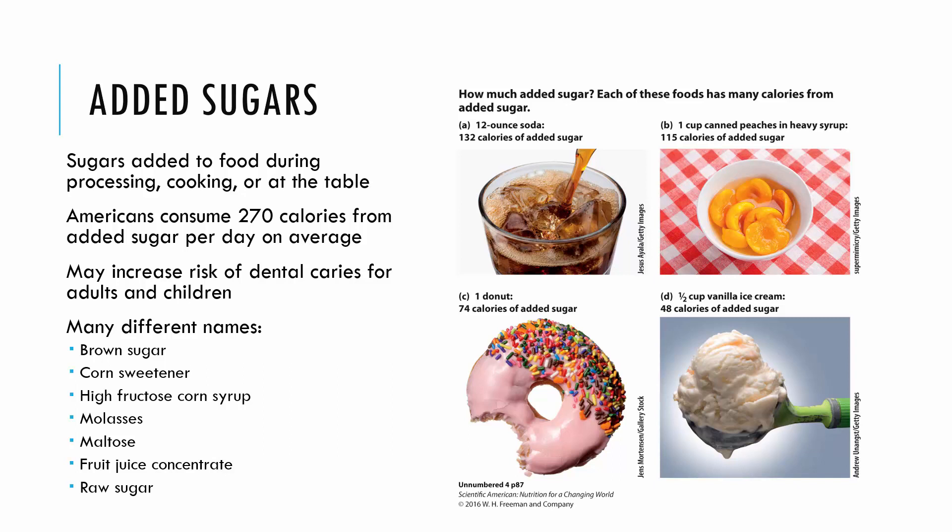Looking at some examples: a 12-ounce soda has 132 calories from added sugar, a donut has 74, a cup of vanilla ice cream has 48, and peaches in heavy syrup has 115 calories of added sugar. Canned peaches are a good example — they could have no added sugar, be canned in juice, or be canned in heavy syrup with much more added sugar. These are things to look for when reading a label, not saying to never have treats, but just being aware of what foods may have added sugar.